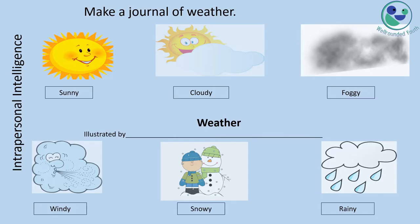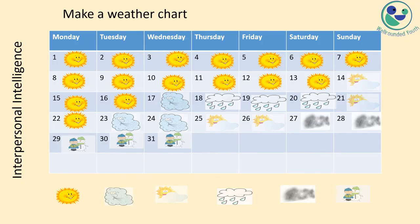For intrapersonal intelligence, students can make a journal of weather of their own choice. For interpersonal intelligence, you can ask students to make a weather chart in which they define the weather condition of a month.